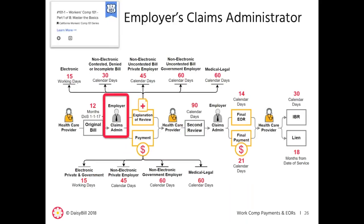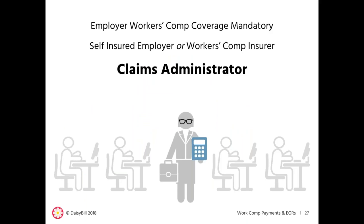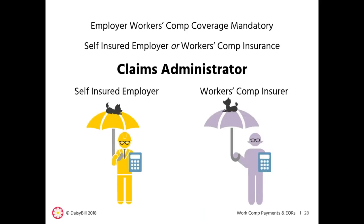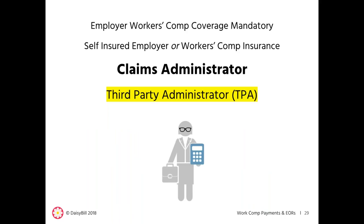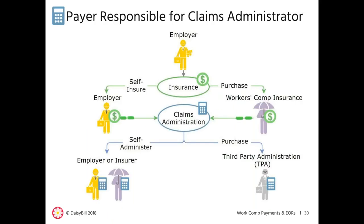In our first webinar, Master the Basics, we discussed the role of the claims administrator. Both self-insured employers and insurers must designate a claims administrator to manage all aspects of an injured worker's claim. A self-insured employer or an insurer may act as their own claims administrator, or these entities may choose to hire a third-party administrator, known as a TPA, to act as the claims administrator. Ultimately, the employer or the employer's insurer is responsible for the actions of its claims administrator.